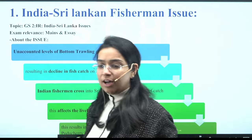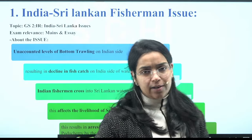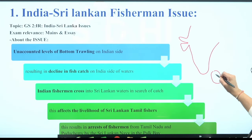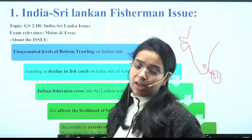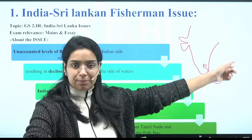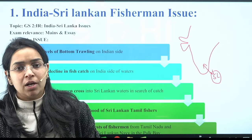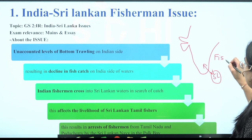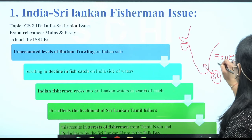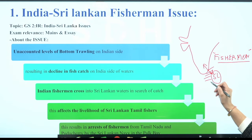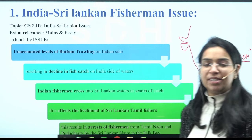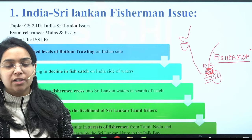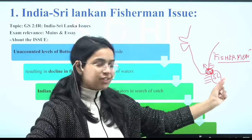The first topic is the India-Sri Lanka fisherman issue. Sri Lanka is a very important neighbour of India, and the ups and downs in these ties are very important for our exam — usually one question appears on a neighbouring country. The particular issue that India faces is the issue of fishermen. The coastal waters between the two countries are a major area for fishing, which is the main economic livelihood for people on both sides — Indian fishermen as well as Sri Lankan fishermen.